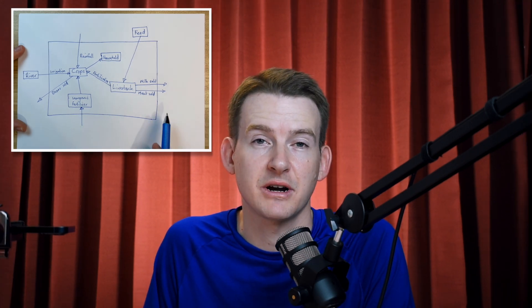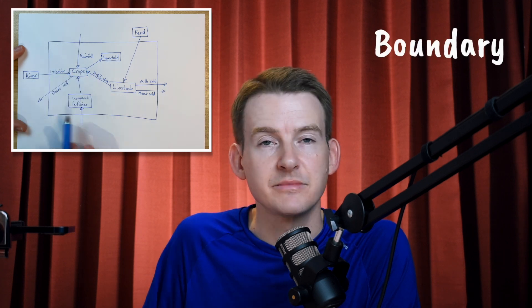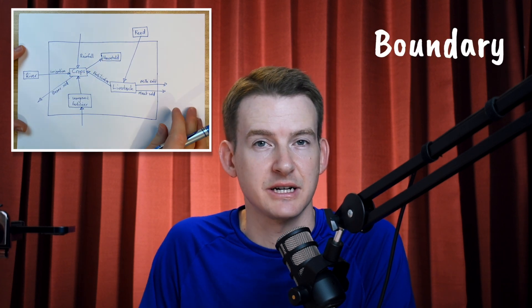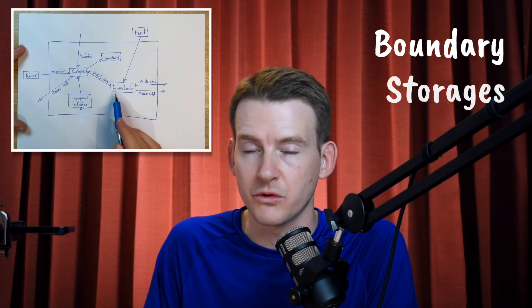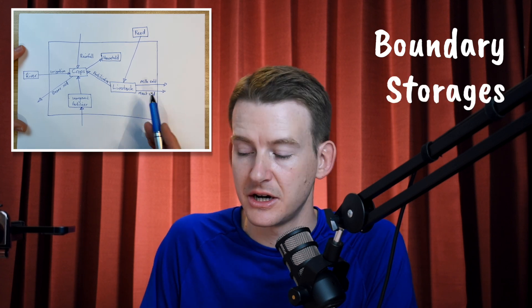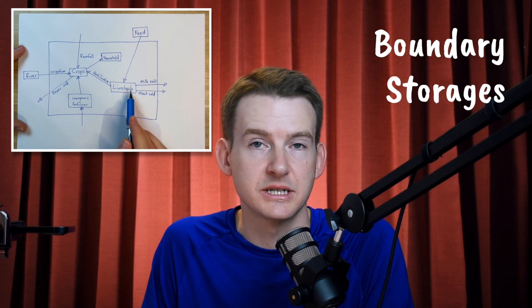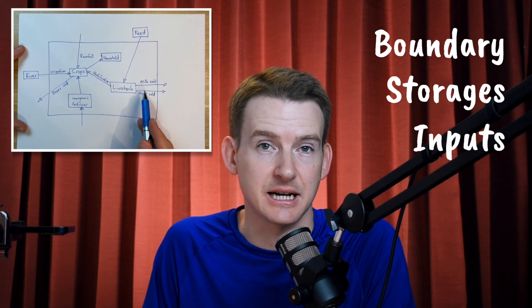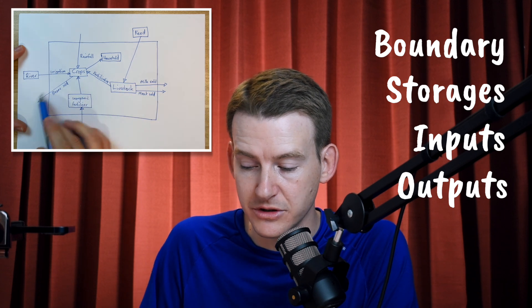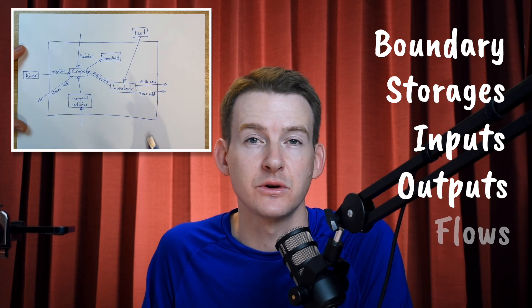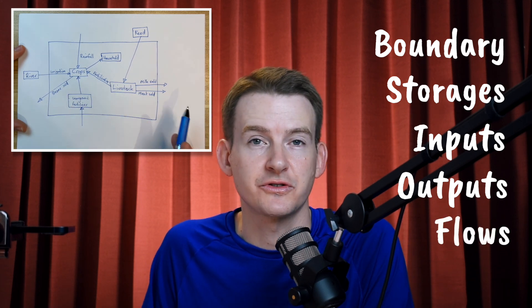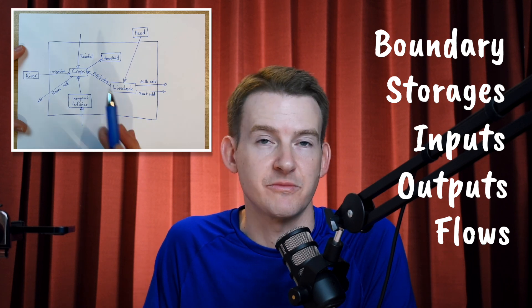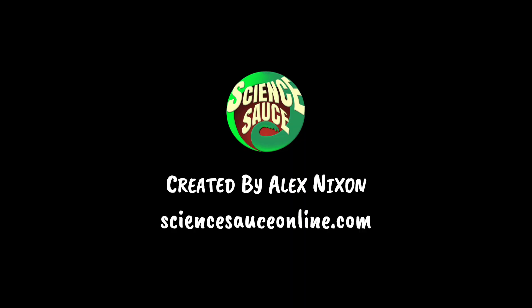So remember, a good system diagram has a boundary around the outside and that allows us to see what is going on inside and outside of the system. We've got storages of energy or matter and those are represented with a word that tells us what that storage is and a box around it. We've got inputs and outputs shown with arrows going in or out of the system, and we've got flows which are transfers or transformations of energy or matter between the storages represented with arrows.